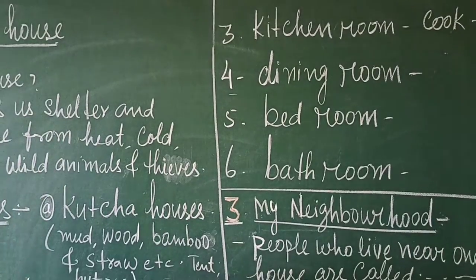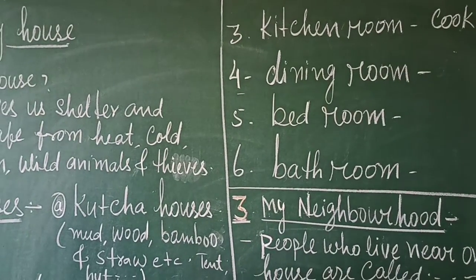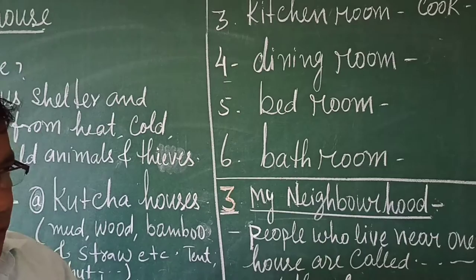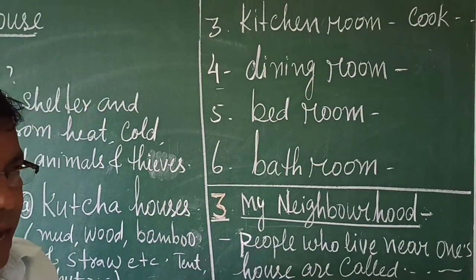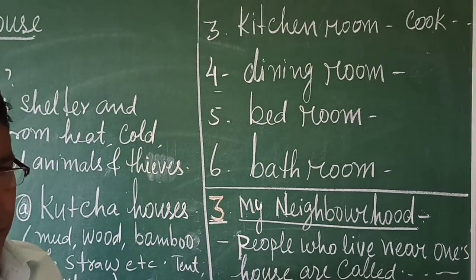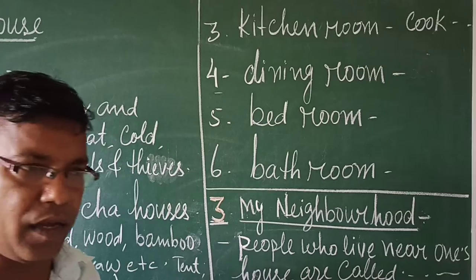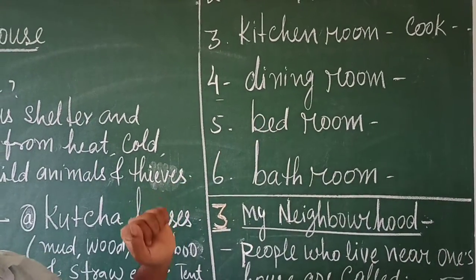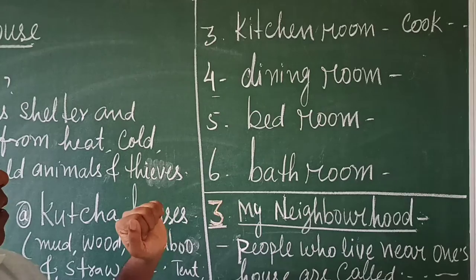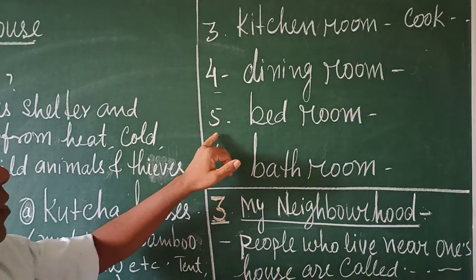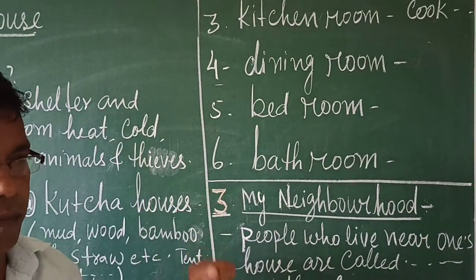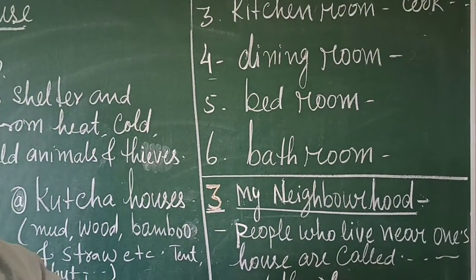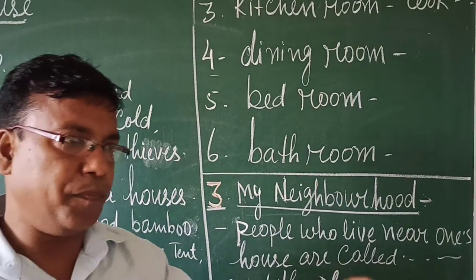The fourth point is the dining room. The dining room is the place where we sit together and have our breakfast, lunch and meals. This is called the dining room. The fifth room is the bedroom. In the bedroom there is a bed.